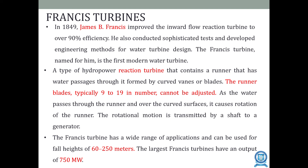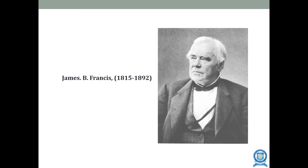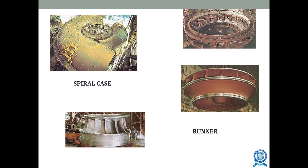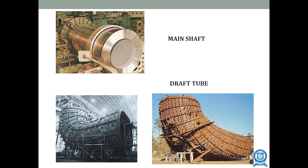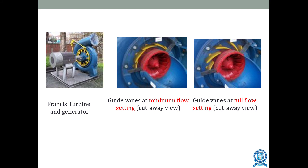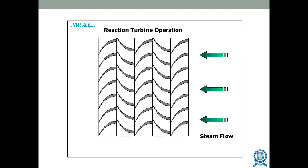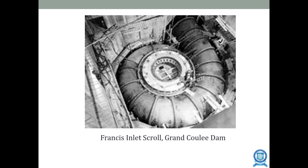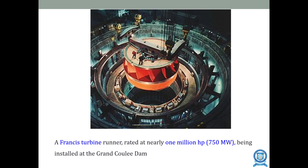The Francis turbine has a wide range of applications and can be used for heads from 60 to 250 meters. The largest Francis turbines have an output of 750 megawatts. This is James B. Francis, and the Francis turbine runner shown is rated at nearly 1 million horsepower — or 750 megawatts — being installed in the Grand Coulee Dam.